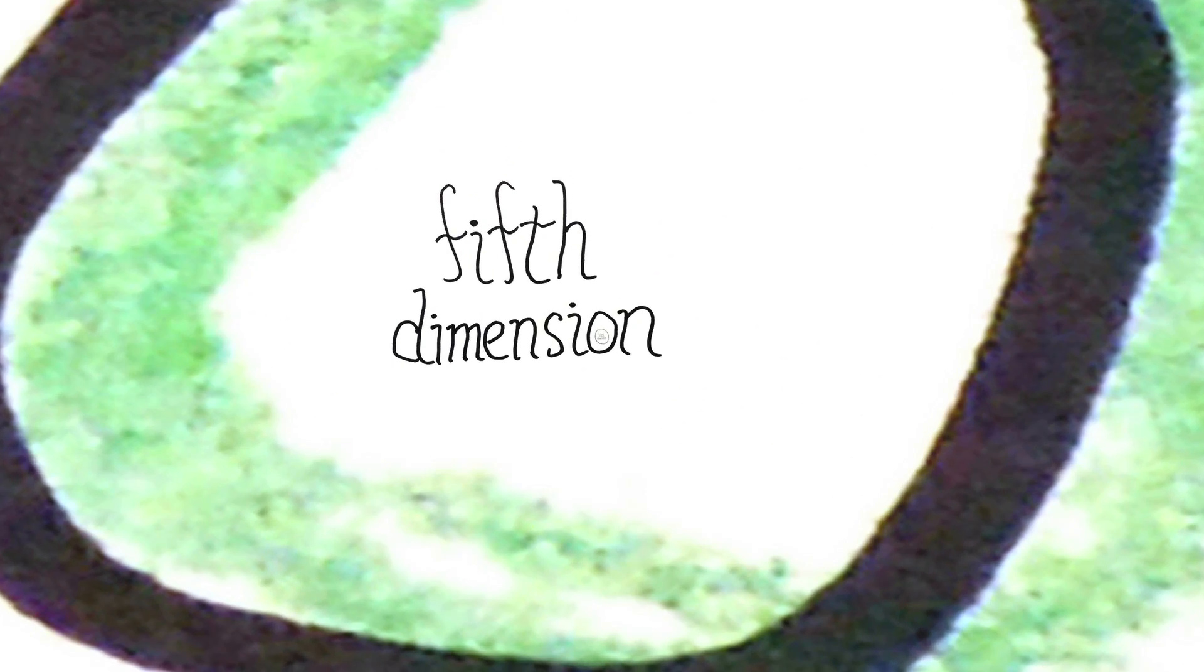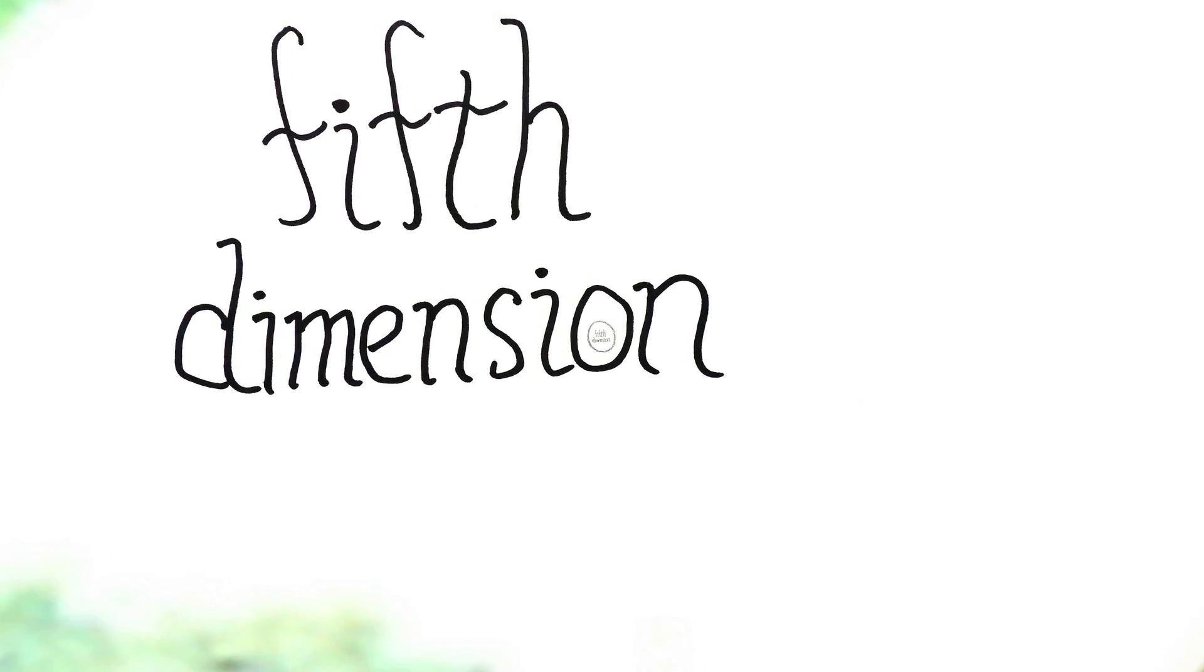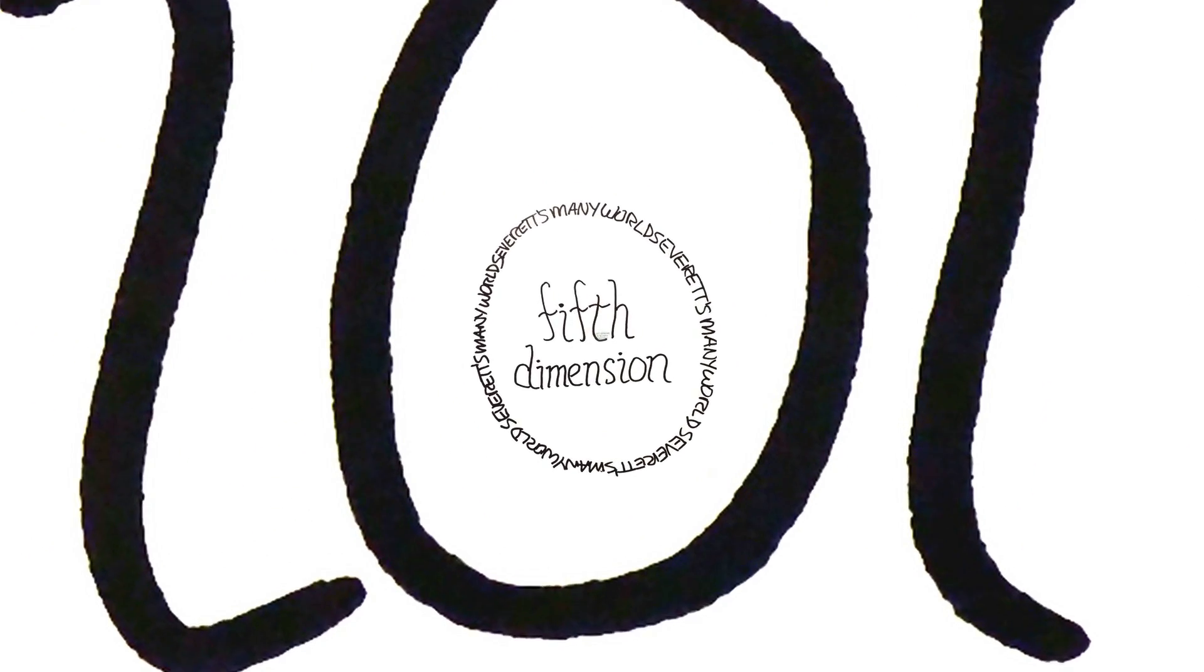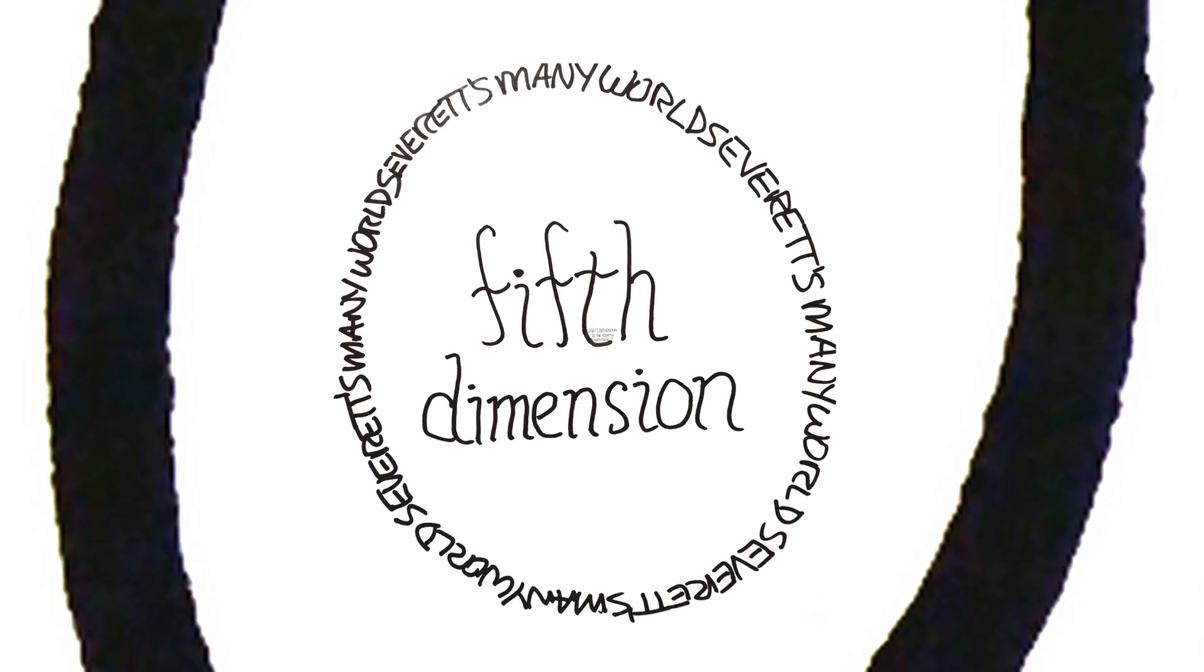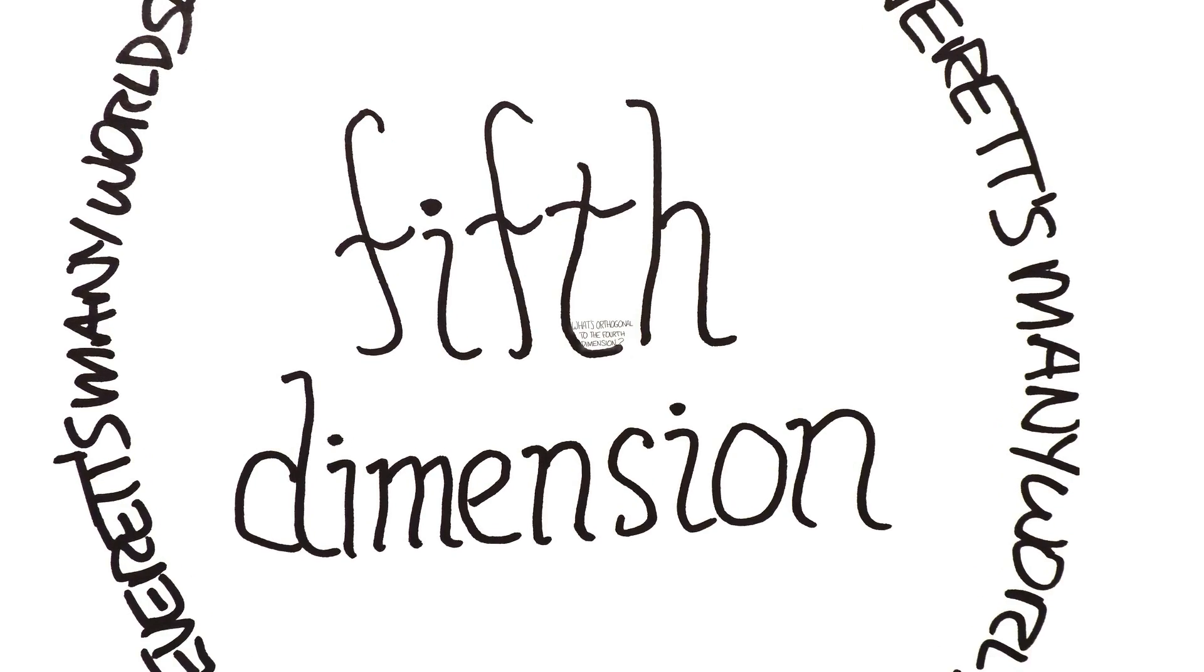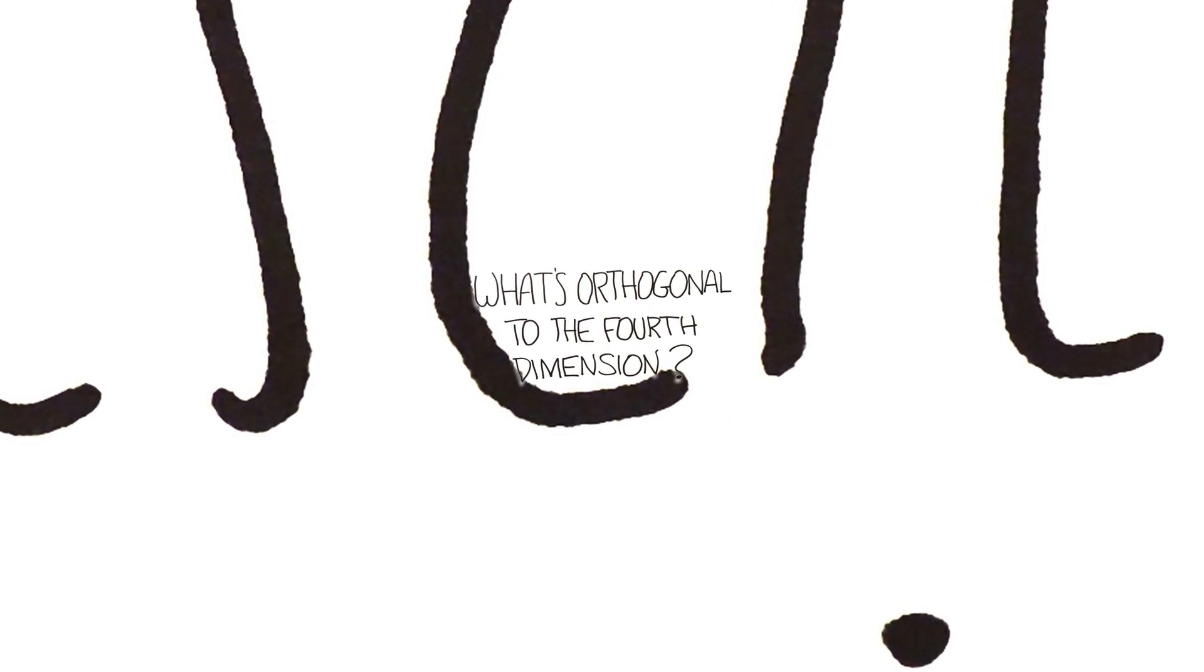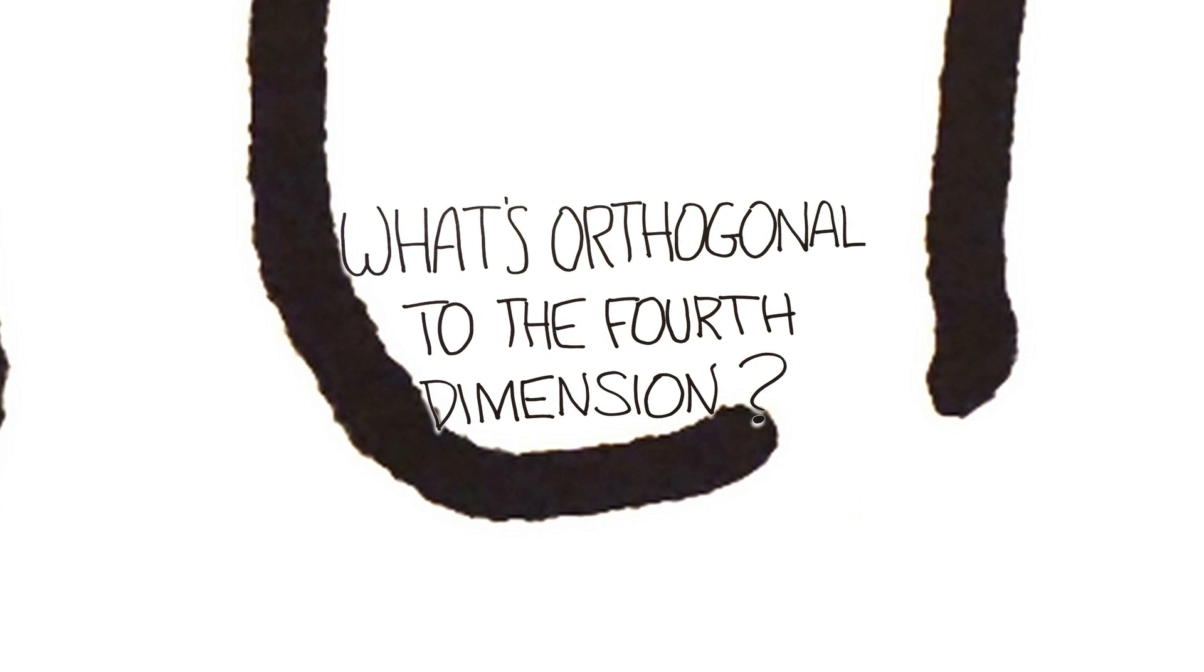Likewise, Hugh Everett said that his branching many worlds occur within a space which is orthogonal to space-time. But it's only my project at this point that says that means the other parallel universe outcomes described by Everett's theory are within the fifth spatial dimension, because that's what's orthogonal to the fourth.